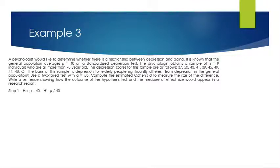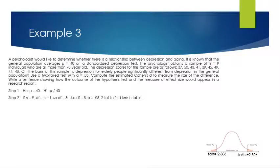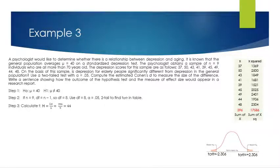Step one: write the hypotheses for a two-tail test. The null is mean equals 40; the research hypothesis is mean is not equal to 40. Step two: n equals 9, so degrees of freedom is 8. From the tables, the critical values are plus and minus 2.306. Draw your picture with positive and negative critical values. Step three: calculate t. We need to find the mean first — adding all X scores gives a sum of 396, and 396 over 9 gives a mean of 44.